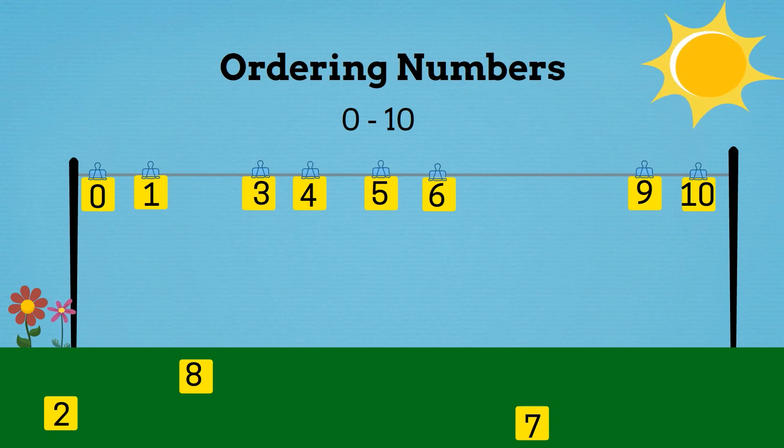What number is 1 more than 6? It's 7. 7 is 1 more than 6. So we'll put 7 after 6.